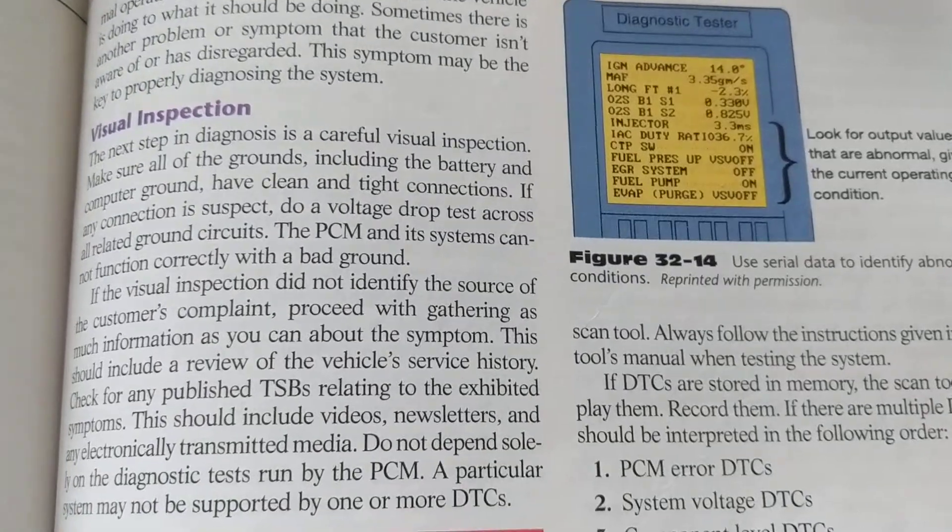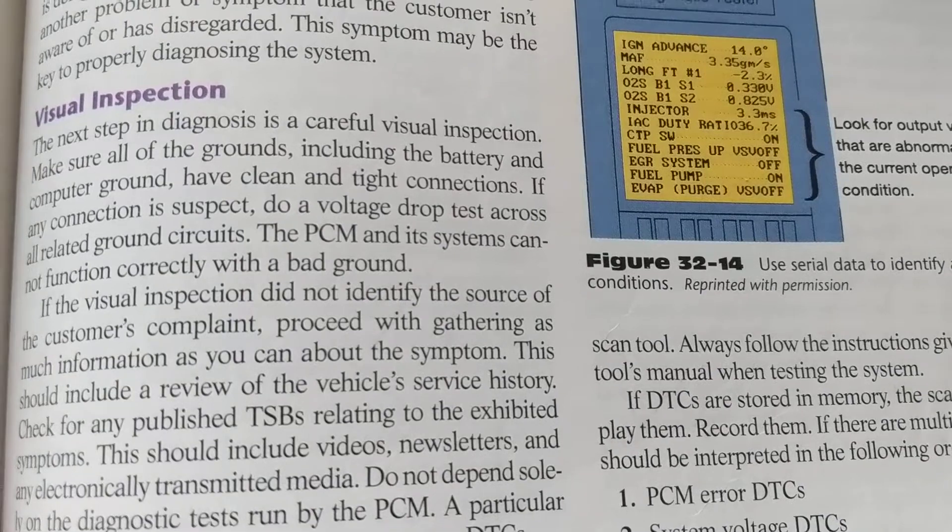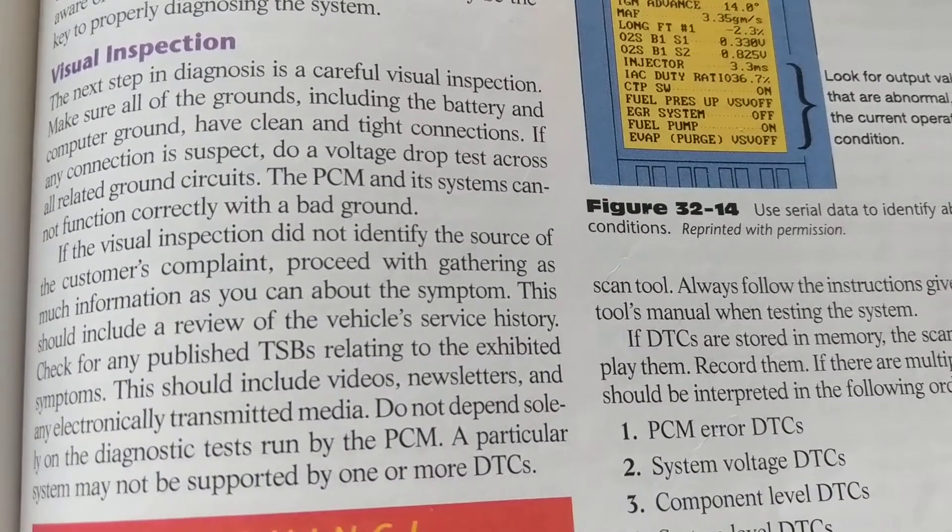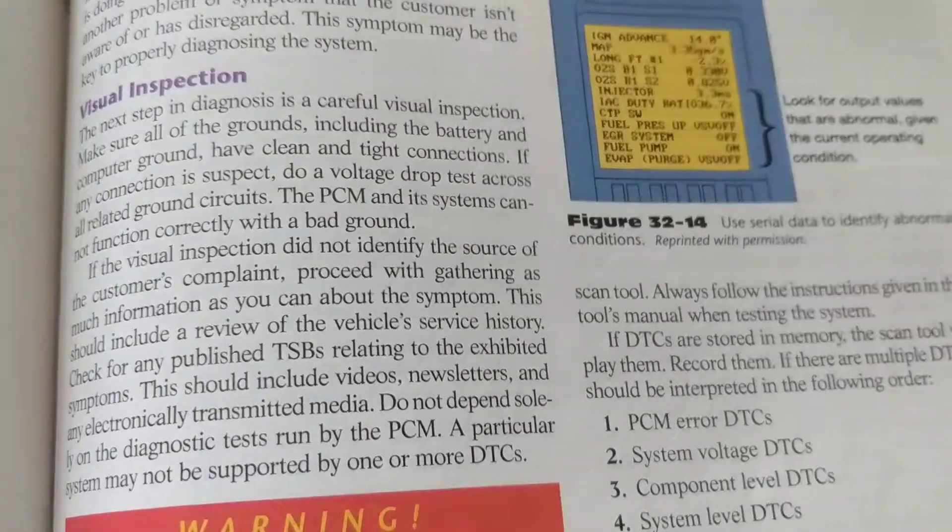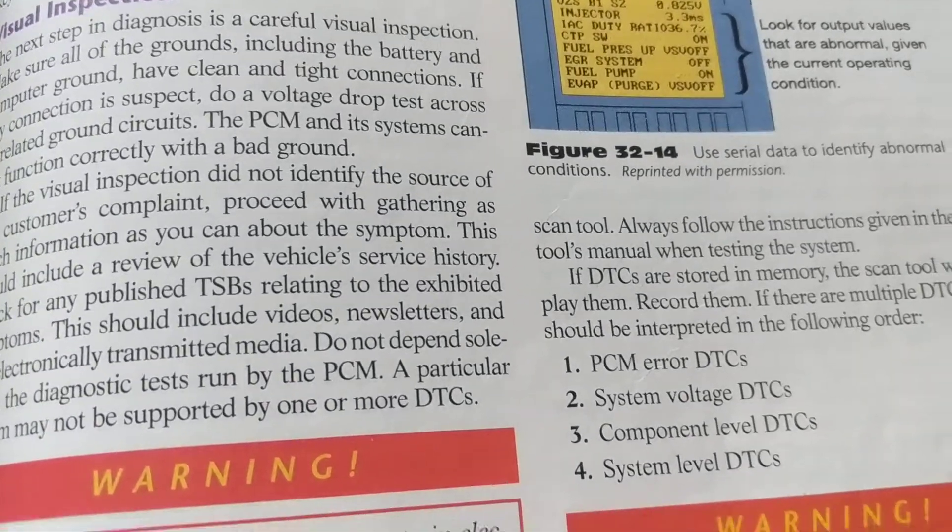Basically, that computer is like the black box of an airplane. It has all the information, the data, the time, and everything that has been occurring. When we want information, we extract information from that black box or that PCM module, that computer module.